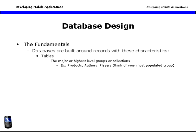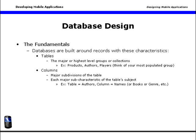You want to think in terms of your most populated groups and divide them into tables. Within tables, you'll find columns, which are the major subdivisions of the table. Each column is a major sub-characteristic of the table's subject. For example, your table might be called authors and include a column called names, or books, or genre, or anything that applies to the author.